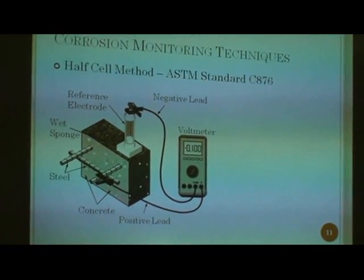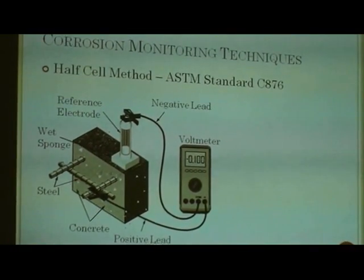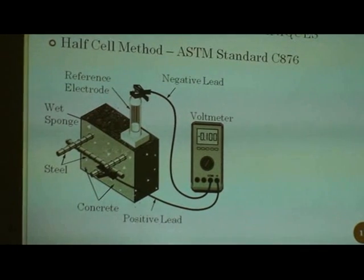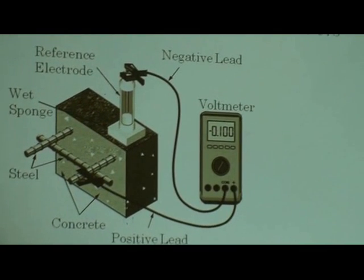One of these methods is called the half-cell method, and it's widely used to detect the activity of corrosion in the industry today. The American Standard for Testing Materials has outlined a procedure for this method. The equipment required is a voltmeter connected to a reference electrode. The positive connection to the voltmeter is attached to a piece of exposed rebar on the concrete to be tested, and the negative connection is connected to the reference electrode, which is then connected to exposed rebar at predetermined locations in the concrete element.